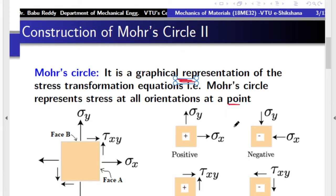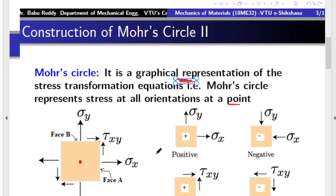On problems on Mohr's circle, you will be given a plane stress element with sigma x, sigma y, and tau xy applied. The shear stresses are peculiar in nature — they will either be moving towards a corner point or moving away from it. To draw the Mohr circle, we need to carefully take the sign of the applied stresses. We will quickly revise the sign conventions for the 2D stress element.